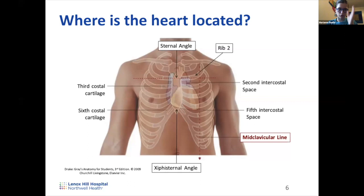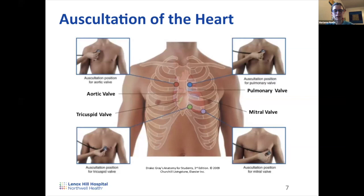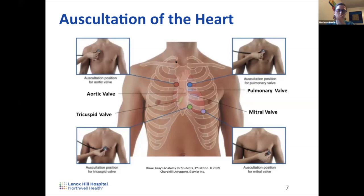These surface anatomy landmarks are clinically very important because you need to know where the heart is in order to auscultate the valves. There are four different valves, and knowing these landmark positions tells you where to place your stethoscope. For example, to listen to the aortic valve, you use these landmarks to properly auscultate at the correct position to identify different pathologies.